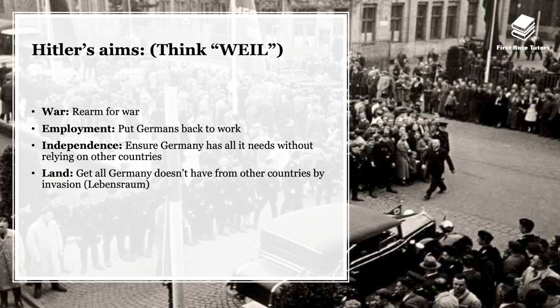The other aspect of his aims was to do with independence. Hitler wanted to ensure that Germany had all it needed without having to rely on other countries, and this is tied into economic independence. Finally, the other important thing to remember is to do with land. Hitler wanted to ensure that Germany had all it needed from other countries by invasion. This was called Lebensraum — in other words, living space and increasing German living space.